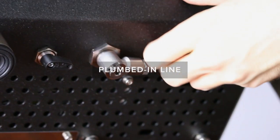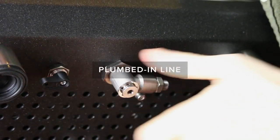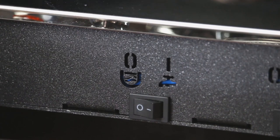If you prefer to plumb in your machine, turn the water source knob to this setting and change the water source switch to the plumbed-in setting like this.